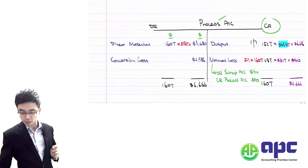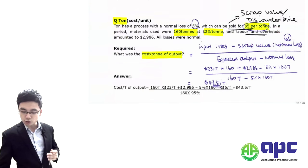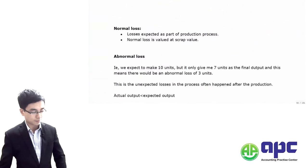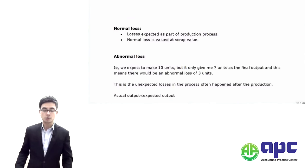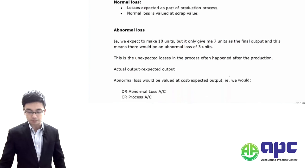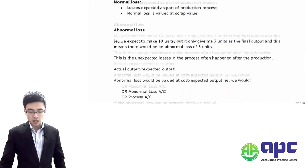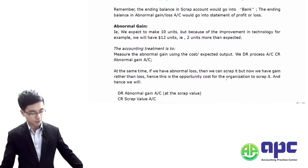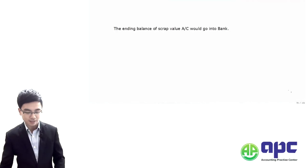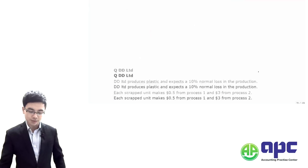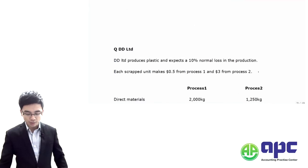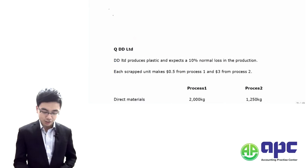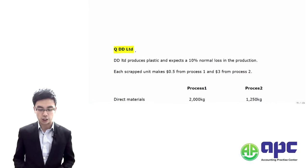Practice makes perfect with process account questions. We've covered normal losses, abnormal losses, and abnormal gains — those are the accounting treatments. The best way to learn is to go through a particular question. Let's now look at the question called DD Limited.